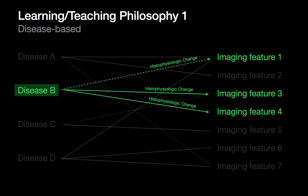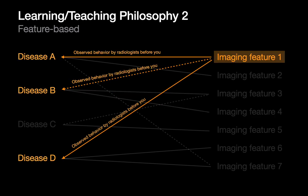Then we'll learn about another disease on another day and learn that it has certain imaging features associated with it. Obviously some of these may overlap with another disease you learn. There's an alternative approach to learning these relationships, and that's what we refer to as a more feature-based approach.